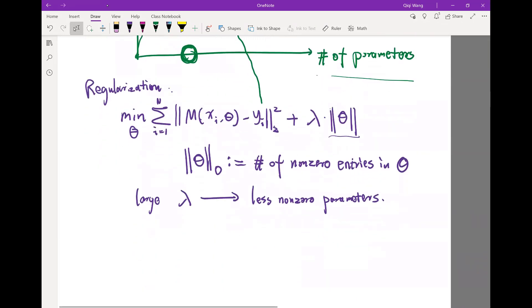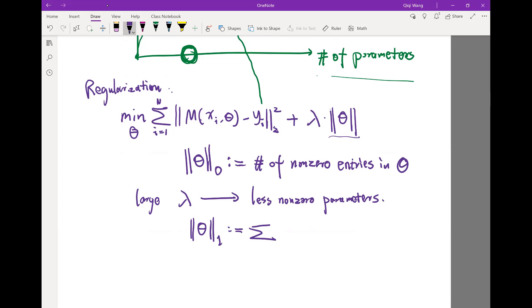And there are other methods of using different norms. And one of the most popular norms to use is the L1 norm. It's defined as the sum of k goes from 1 to the dimension of data, let's say m, theta_k absolute values. It's basically the sum of the absolute values of the individual parameters.